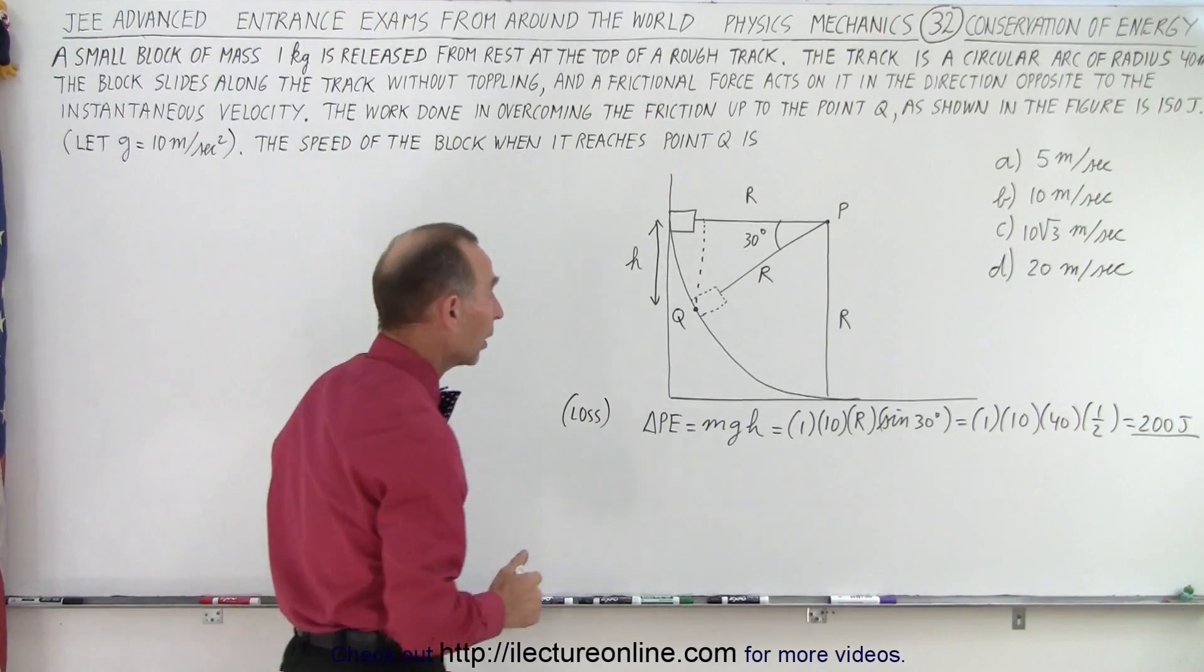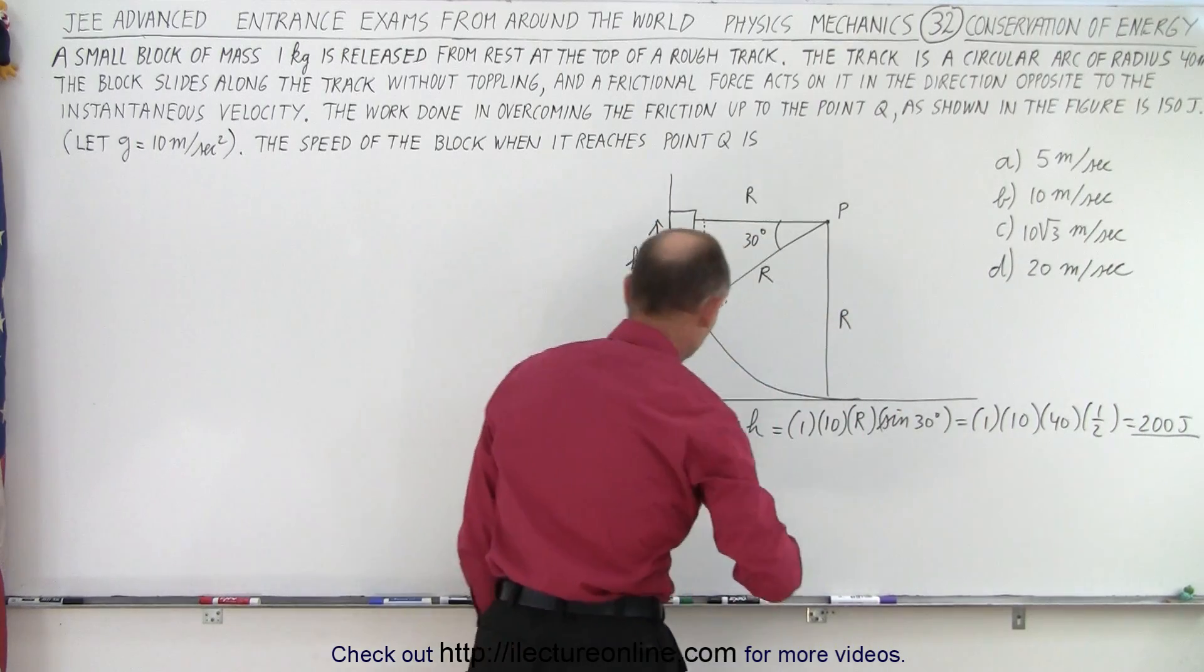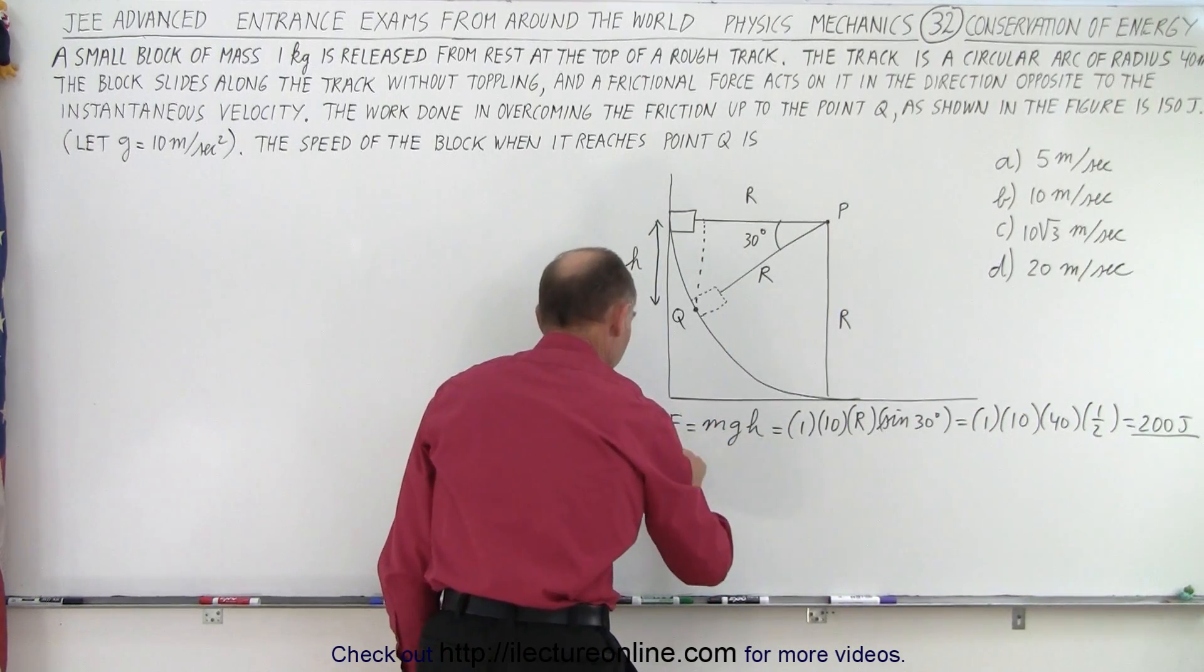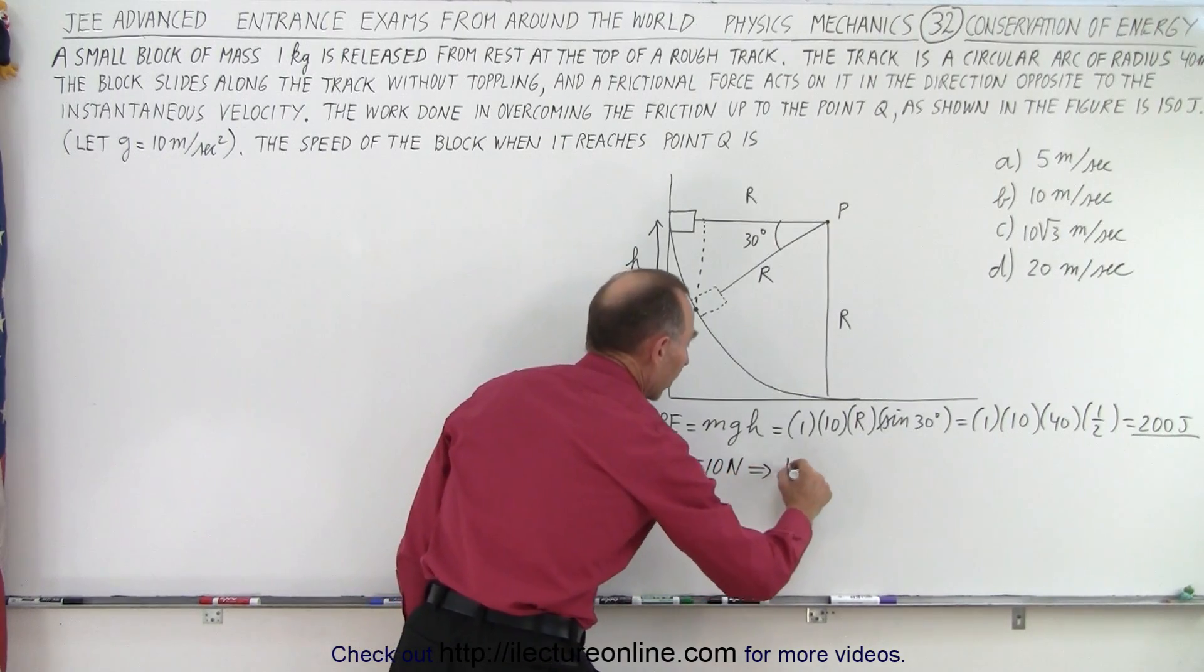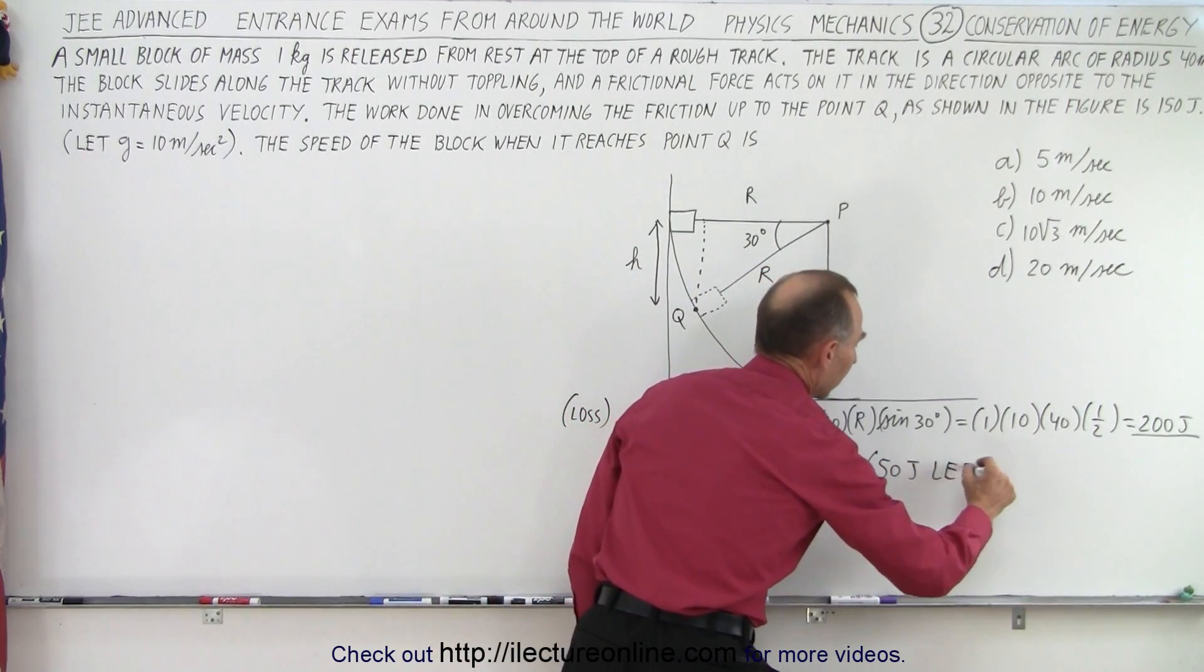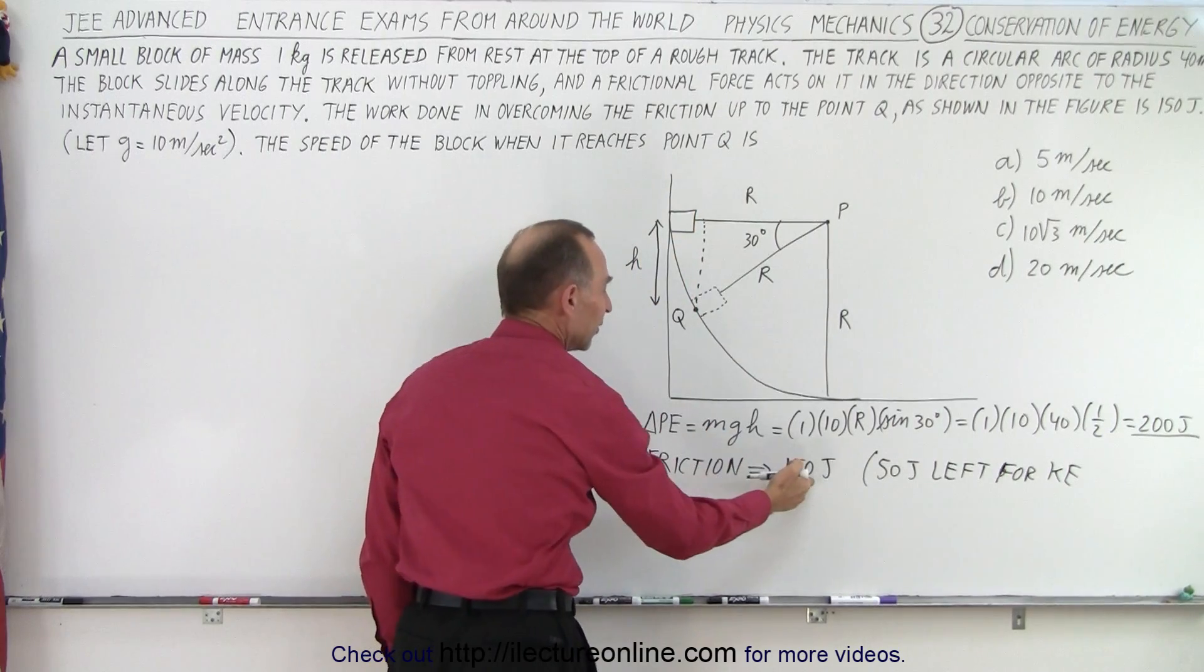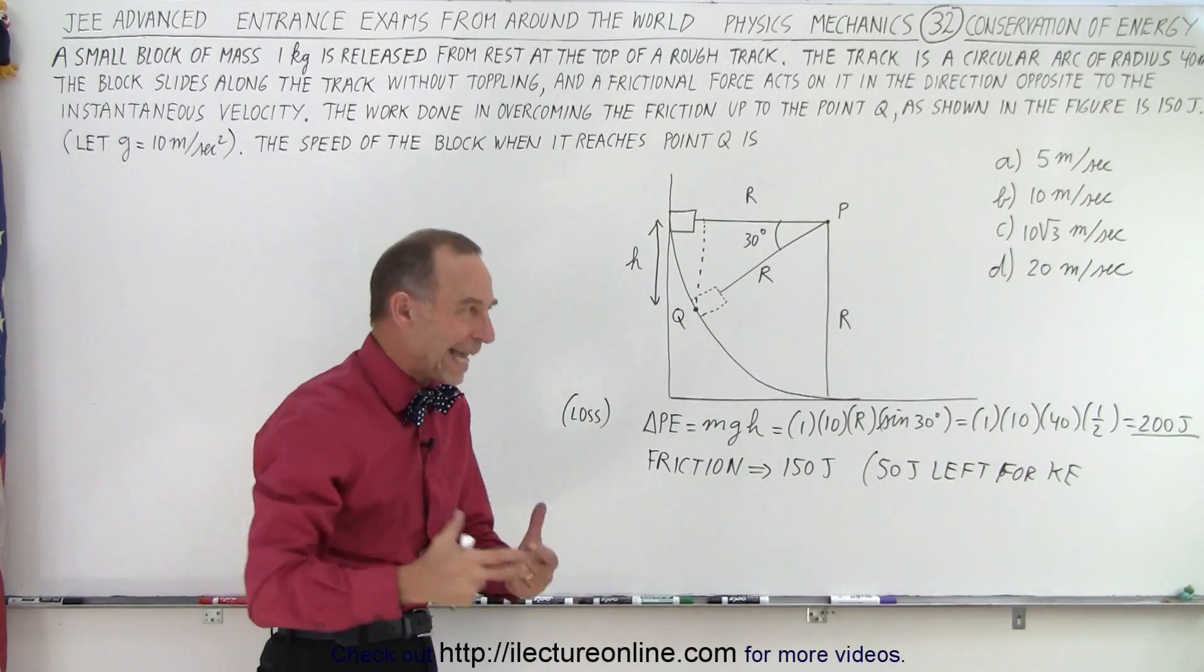Now where does that loss go? Well 150 of it goes to overcoming the friction. So we lose 200 joules, 150 of it goes to friction, so friction takes 150 joules away. That means we have now 50 joules left for kinetic energy. So we take 200 joules of potential energy, 150 of it is used to overcome friction, the remaining 50 joules is used to gain kinetic energy.